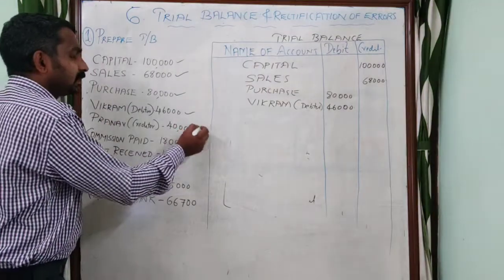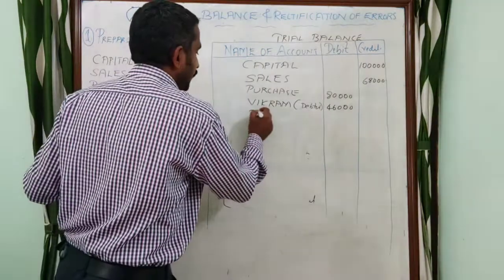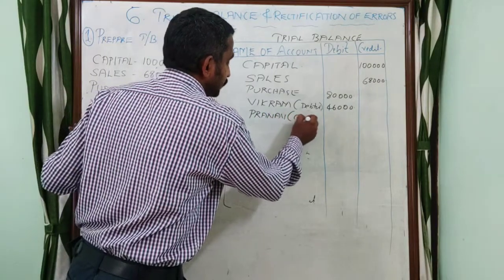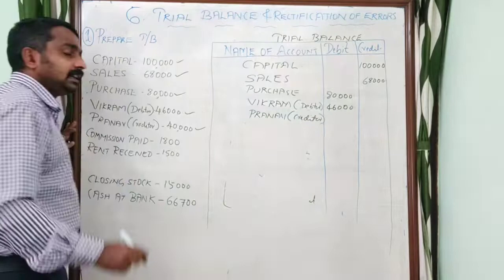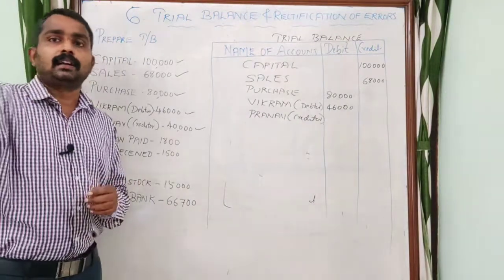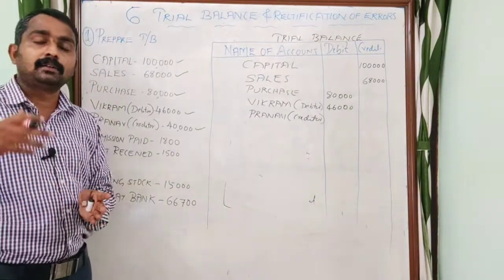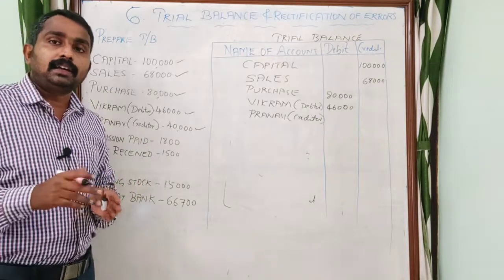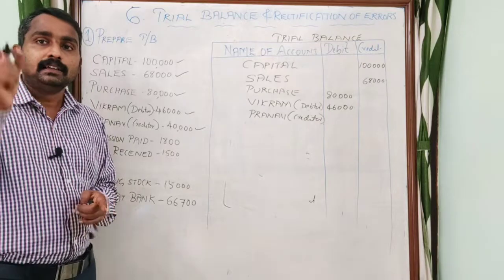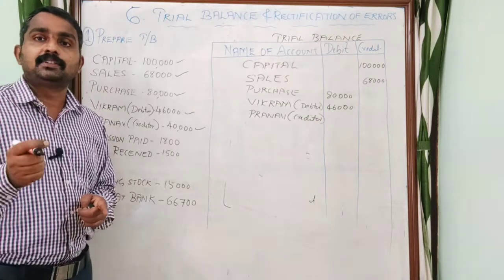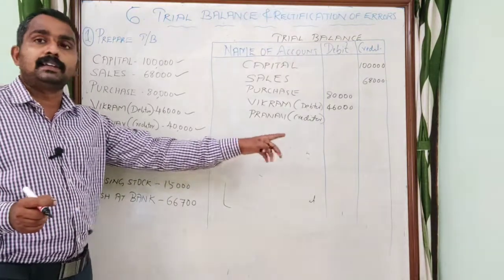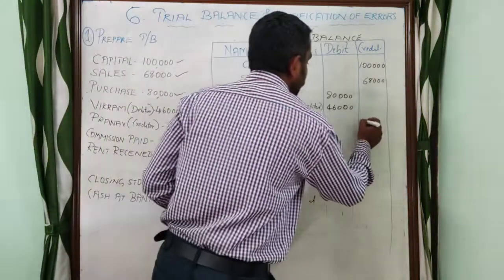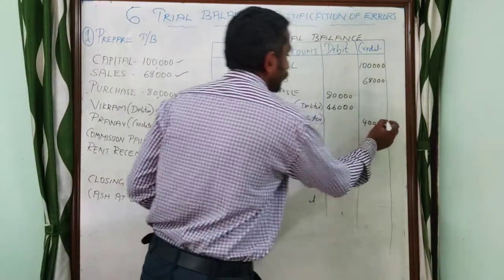Next is Pranav — creditor. The name of the account is Pranav; in brackets write creditor. A creditor is someone we have to pay money to — that is a liability. Liability has a credit balance. So the credit balance for Pranav is 40,000.